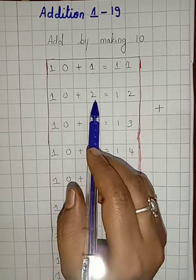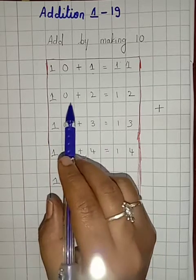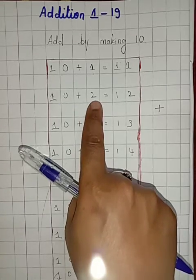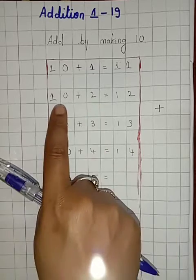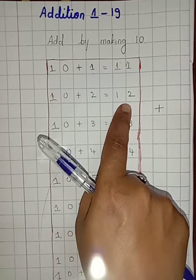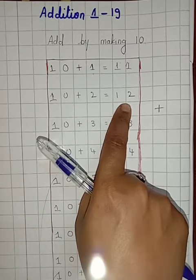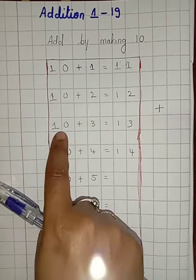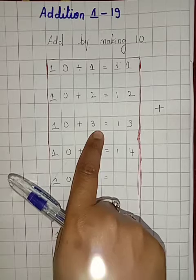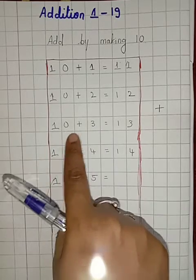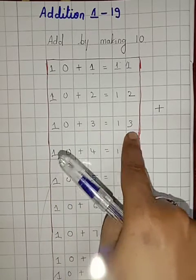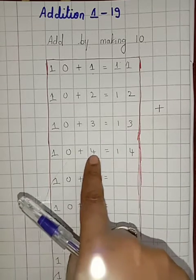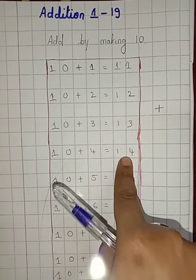Now let us come to 10 plus 2. So how many 10s are there, children? 1 ten is there. And how many 1s are there? 2 ones are there. So 10 plus 2 is equals to 12. In the same way, 10 plus 3 — there is 1 ten and 3 ones. So 10 plus 3 is equals to 13. Like that way, 10 plus 4 is equals to 14.